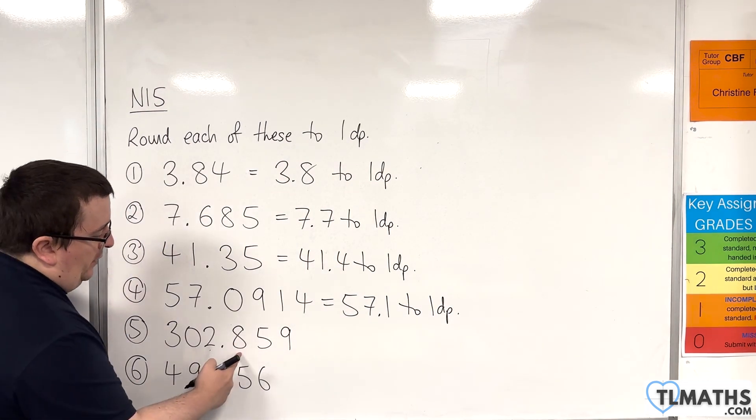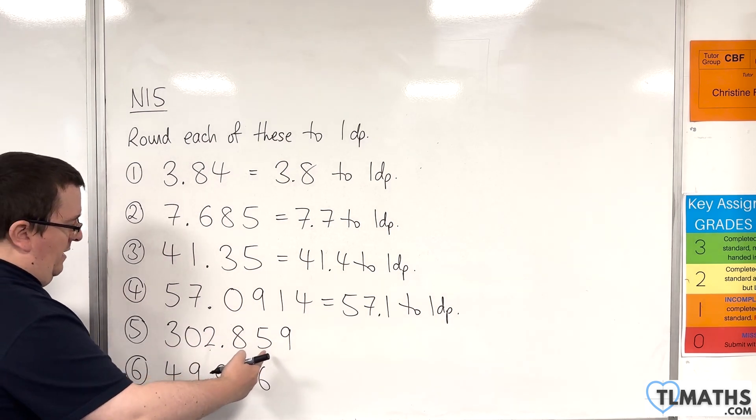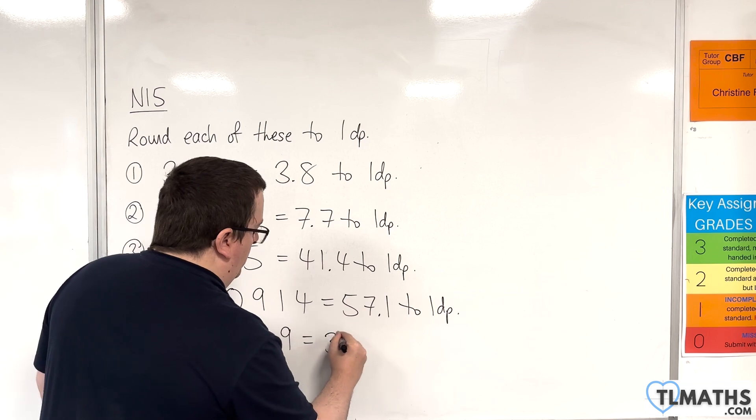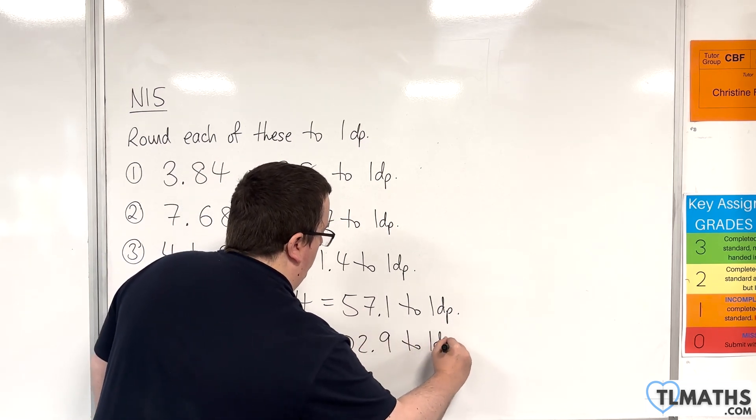Number 5, look at the first decimal place. To the right is 5 or more, so we round this up to 302.9. 302.9 to one decimal place.